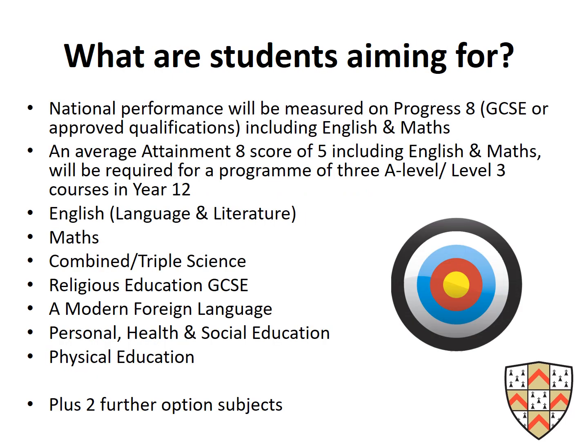So what are students aiming for? National performance will be measured on Progress 8. This is a measure based on their 8 best GCSEs, including English and Maths. An average attainment score of 5, including English and Maths, will be required for them to study 3 A-level subjects in Year 12.